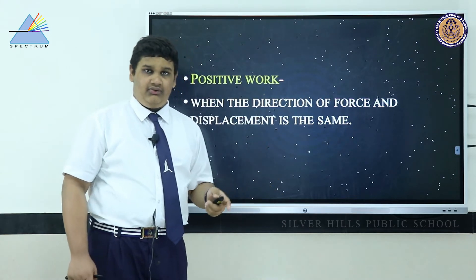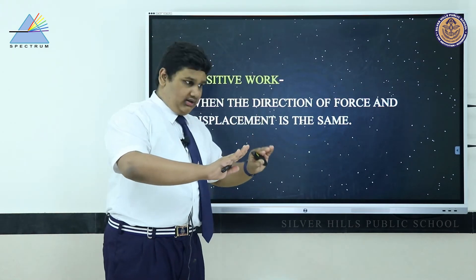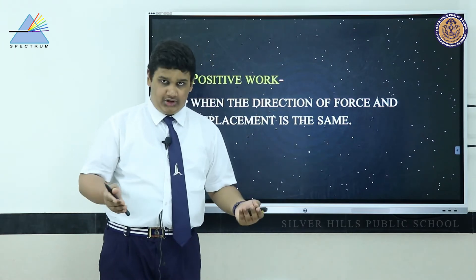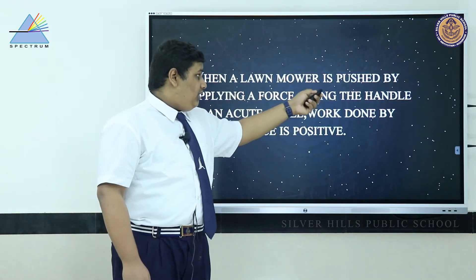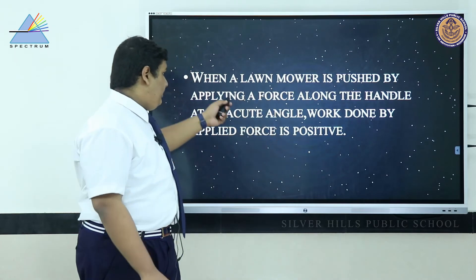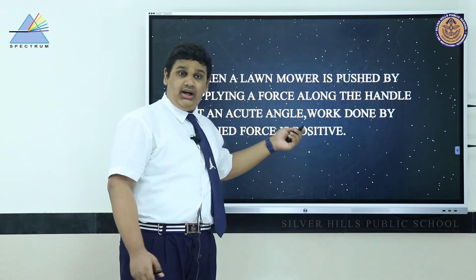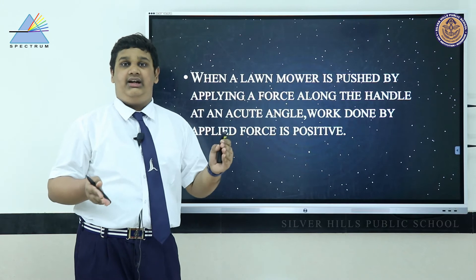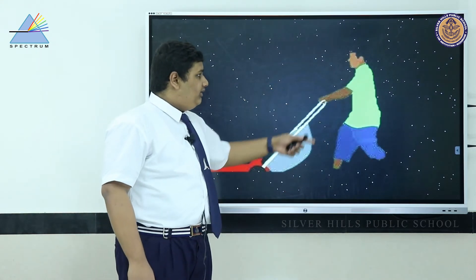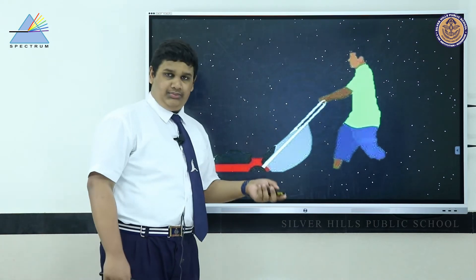Positive work occurs when the direction of force and displacement are the same. When we push a table, we apply a force and the displacement happens in the same direction — that is positive work. Another example: when a lawnmower is pushed by applying a force along the handle at an acute angle (greater than 0° but less than 90°), work done by the applied force is positive, since force is applied and displacement occurs.